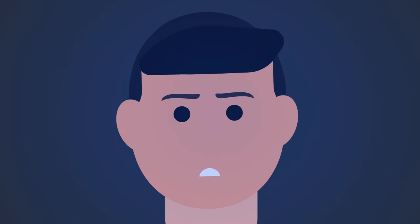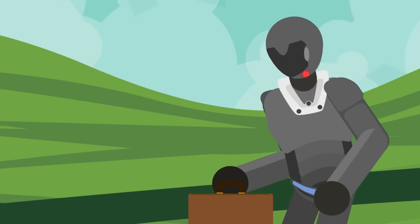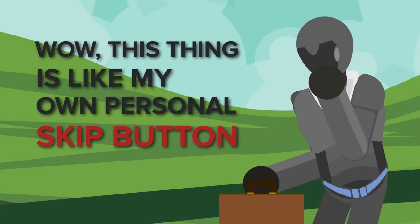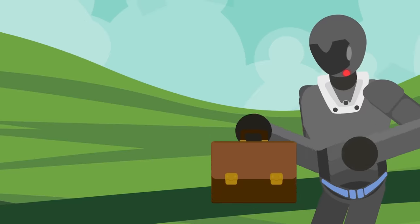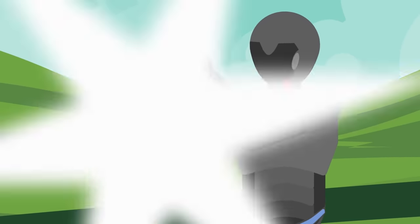When Pietro comes to again, he is miles closer to Site-62C. There is a warm feeling enveloping his body. Wow, this thing is like my own personal skip button, Pietro thinks. He holds up the briefcase, unlatches the locks, sees the bright light, and passes out again.